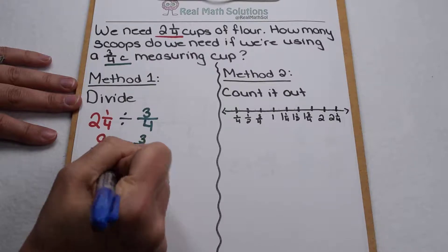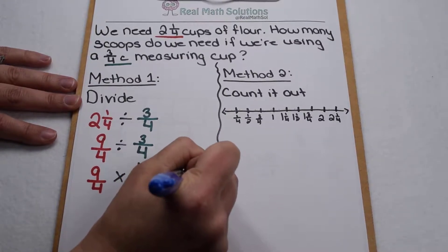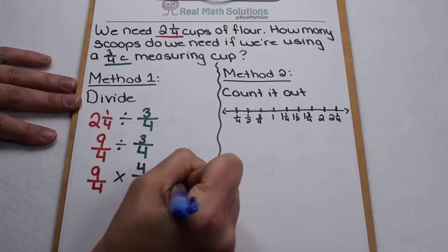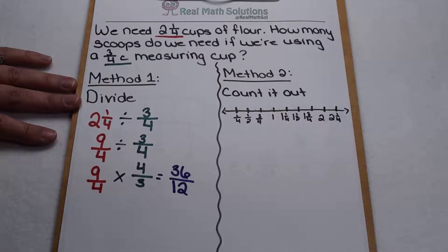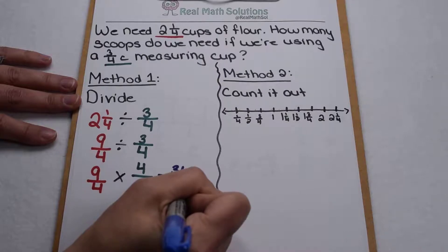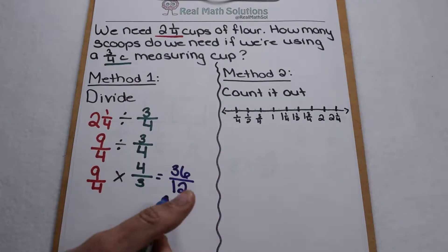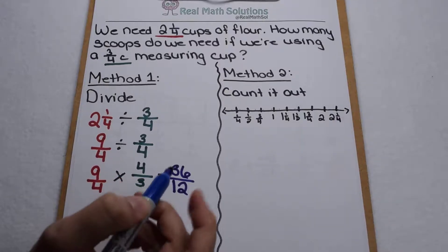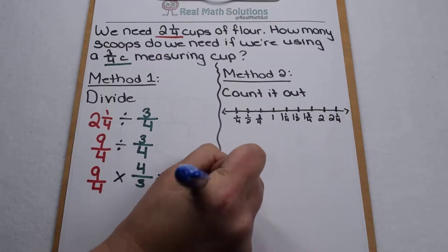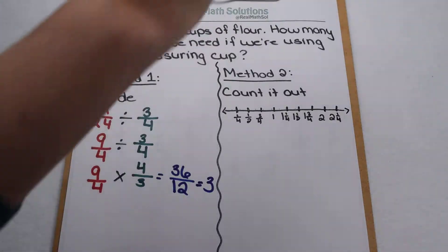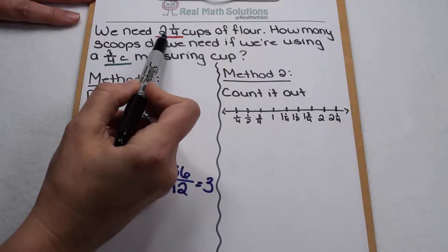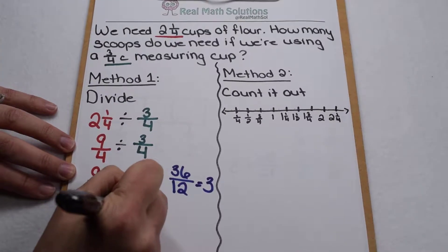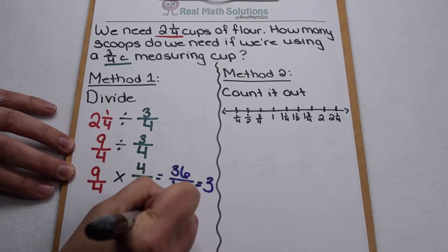Multiply top by top, so nine times four is thirty-six. Multiply denominator by denominator. Four times three is twelve. So I get thirty-six over twelve. Thirty-six over twelve is improper, so to simplify that I need to divide my numerator by my denominator. Thirty-six divided by twelve is three with none left over. So in order to measure up my two and a quarter cups of flour using three quarters cups in each scoop, I'm going to need to come out with three scoops.